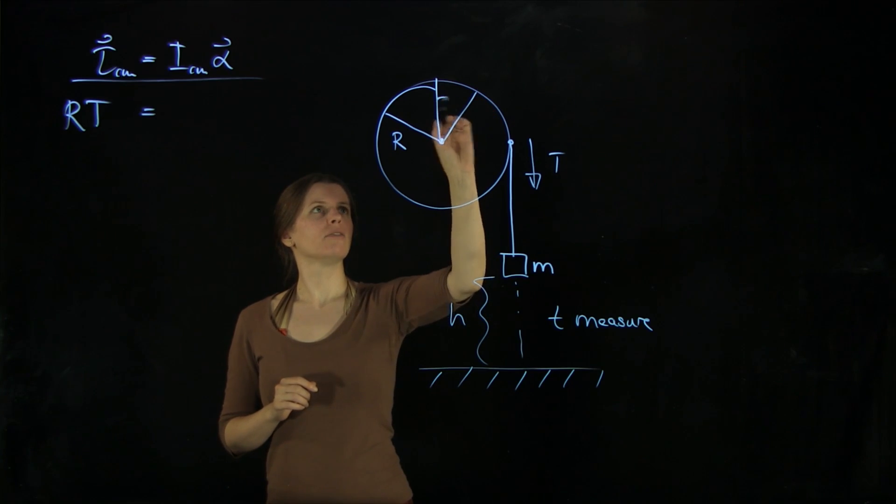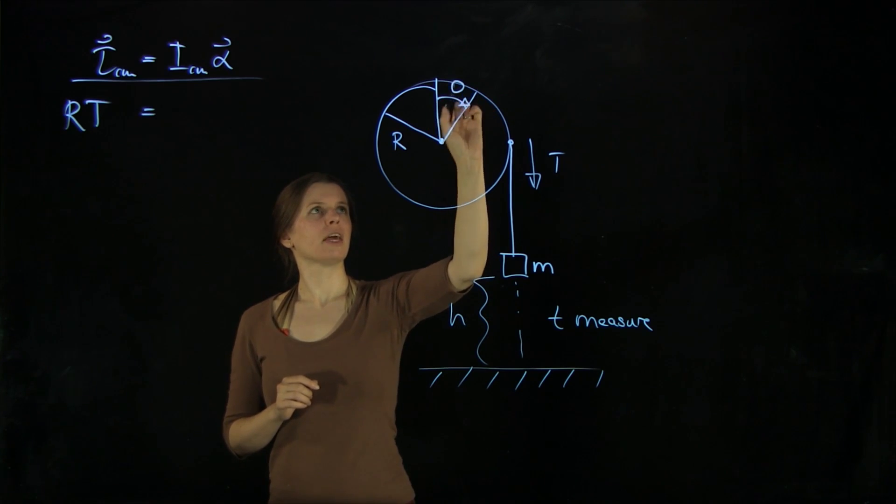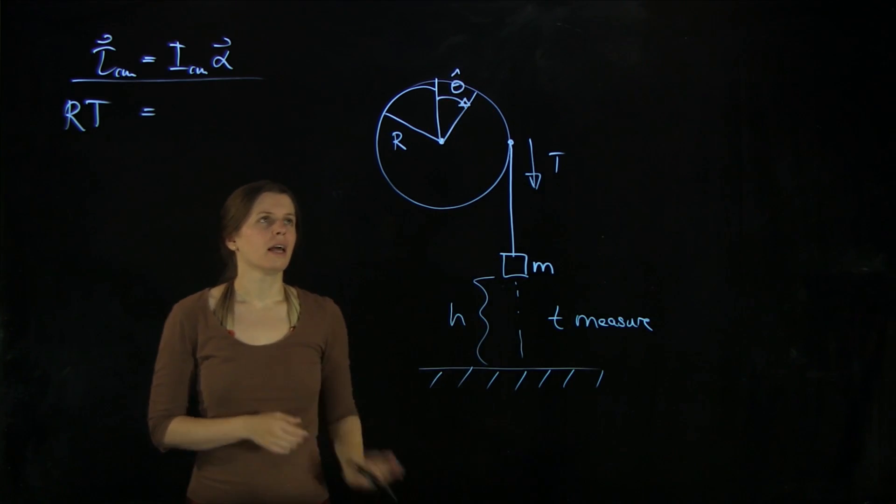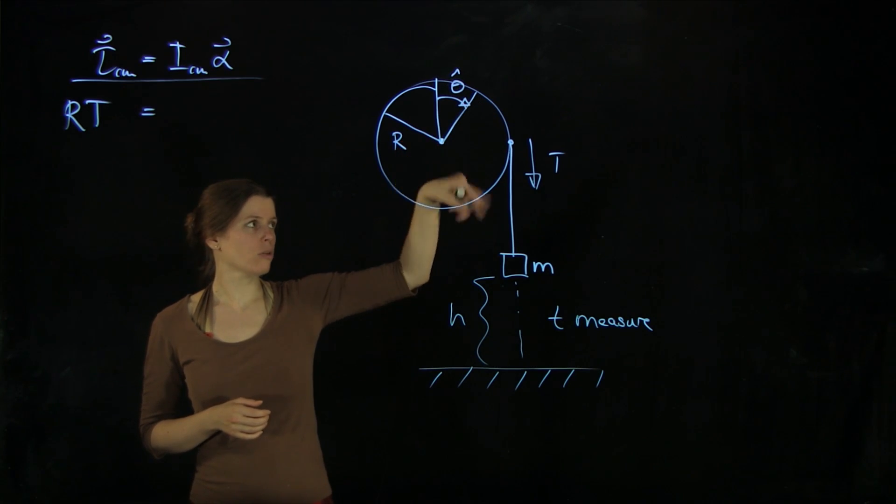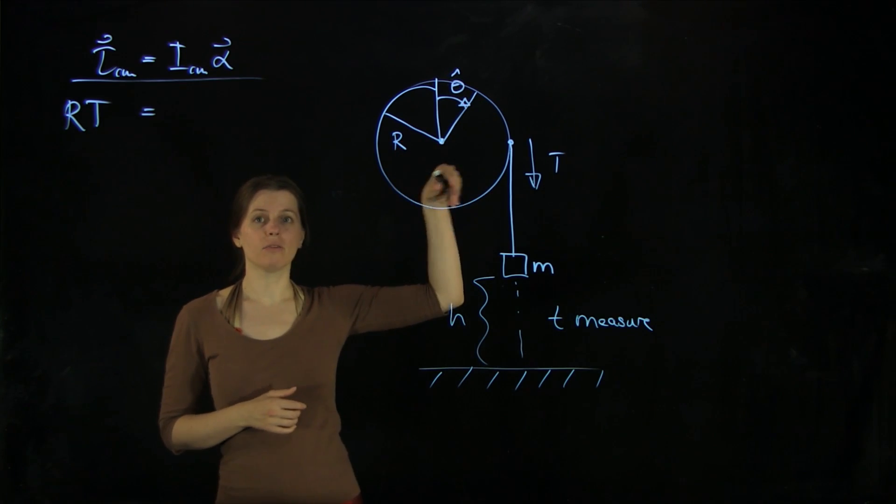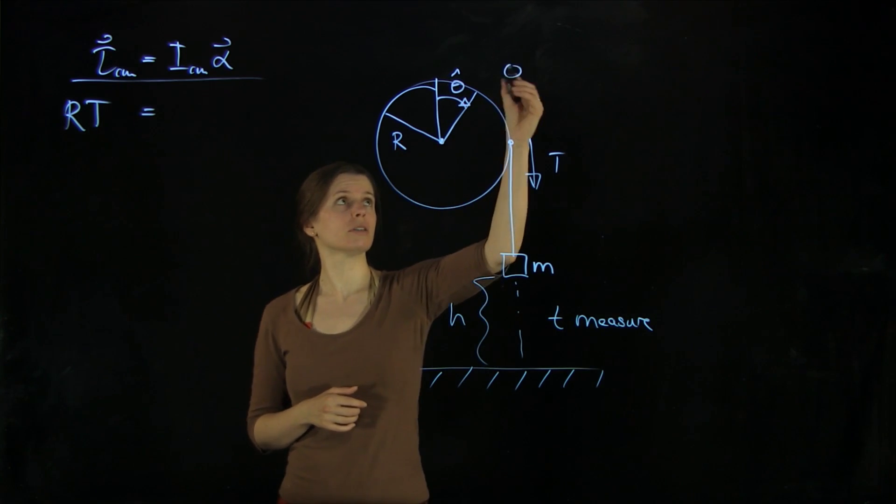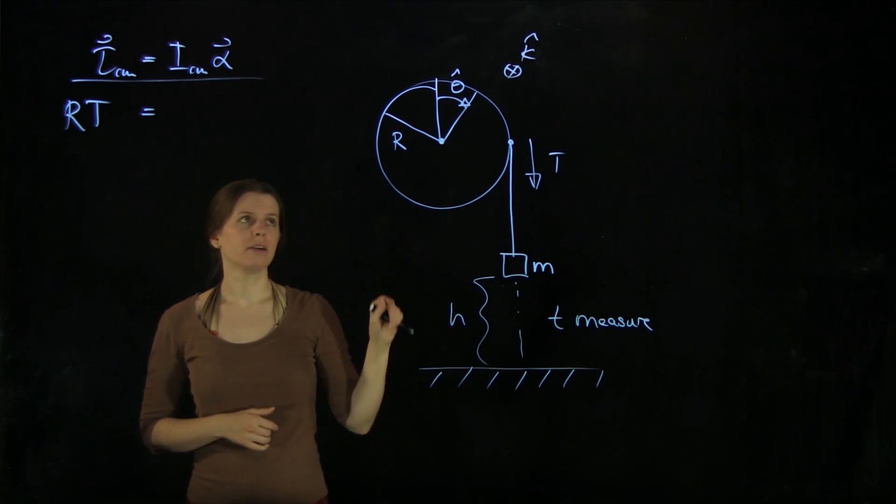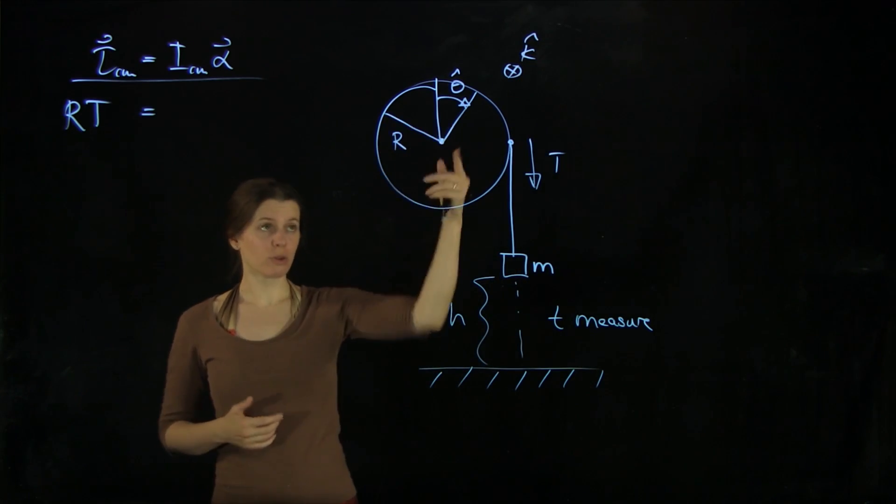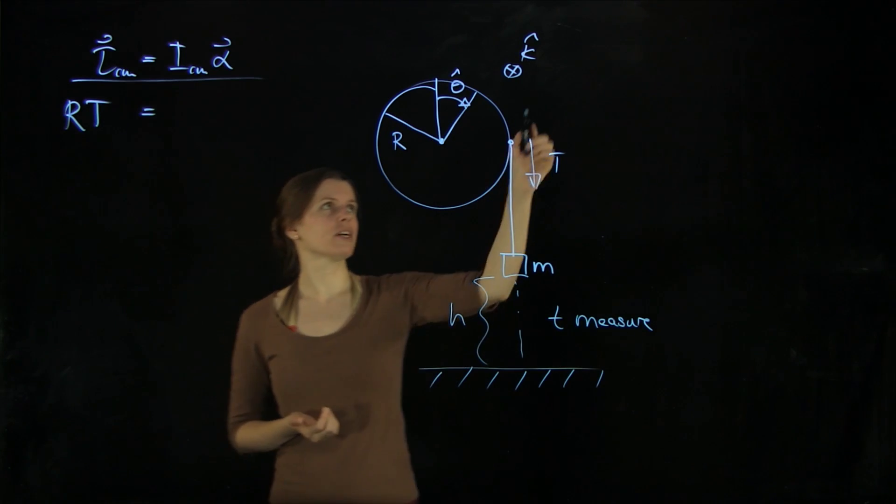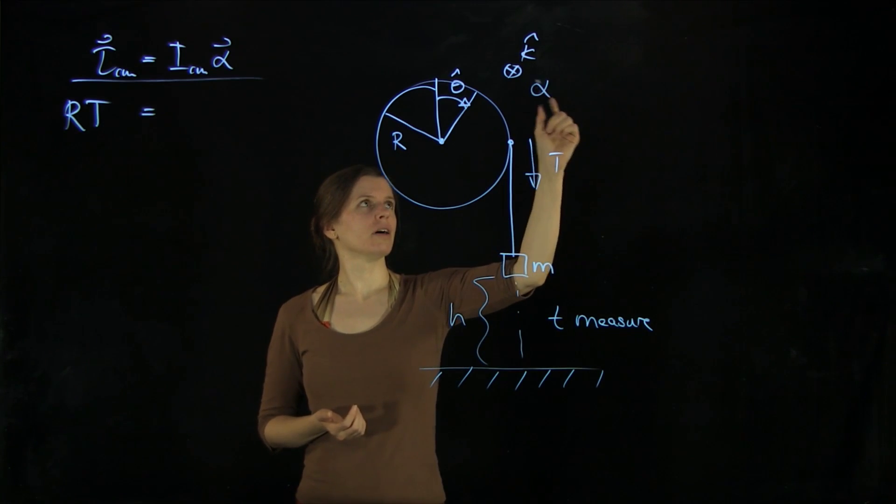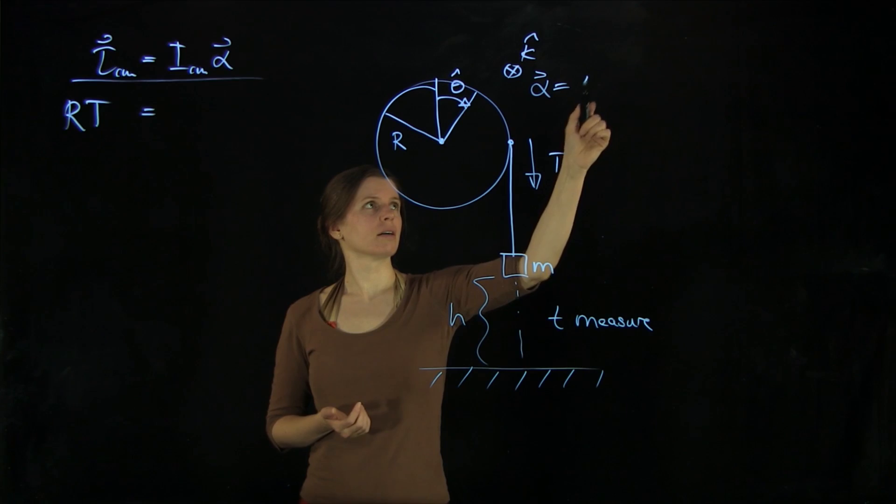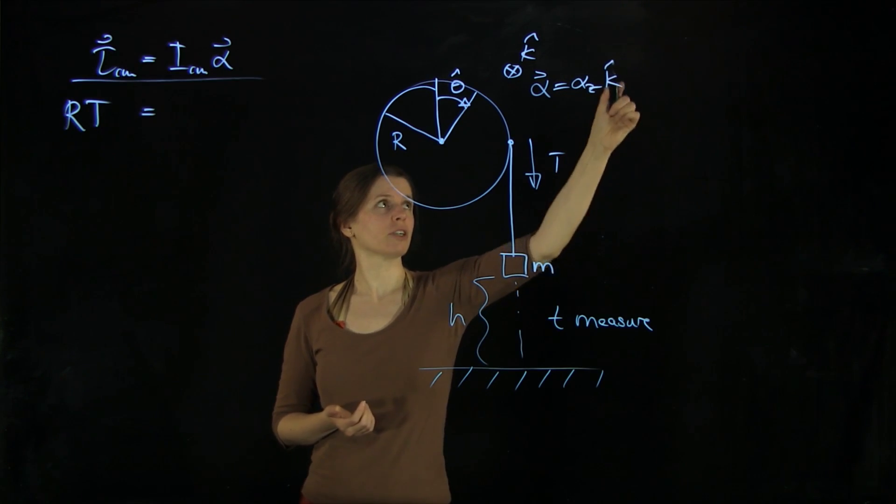So we're going to have theta hat going this way. And if theta hat is going clockwise, my k hat vector is going to go into the board. And if k hat is going to go there, and it's rotating clockwise, the angular acceleration direction is going to go in the k hat direction.